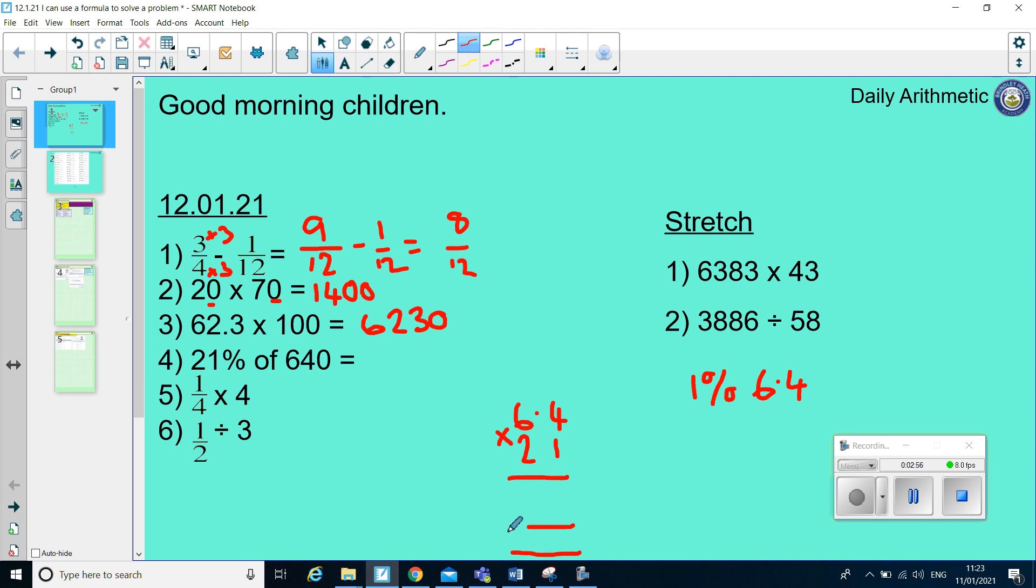The question doesn't ask me what 1% is, it asks me what 21% is. So, then I need to do 6.4 times by 21, and I do that as a long multiplication. Setting it out exactly as I've set mine out on the screen. So, 1 times 4 is 4, 1 times 6 is 6. Remember my golden rule when I go down onto that second line, which is a 0. 2 times 4 is 8. 2 times 6 is 12. And then I add the digits together. 4 add 0 is 4. 6 add 8 gives me 14. Carry my 1. 2 add 1 is 3. And 1 add nothing is 1. And finally, I've got to remember my decimal point. And remember that decimal point drops all the way down from the question all the way down into the answer. So, 21% of 640 is 134.4.